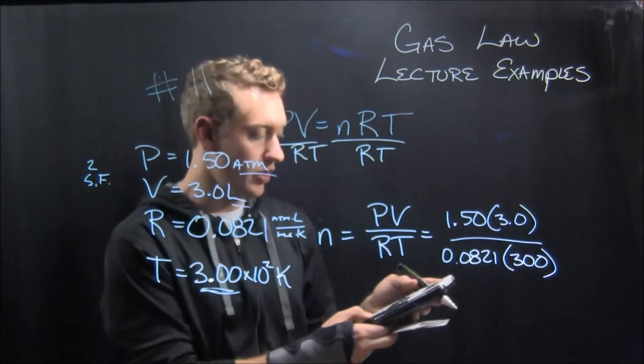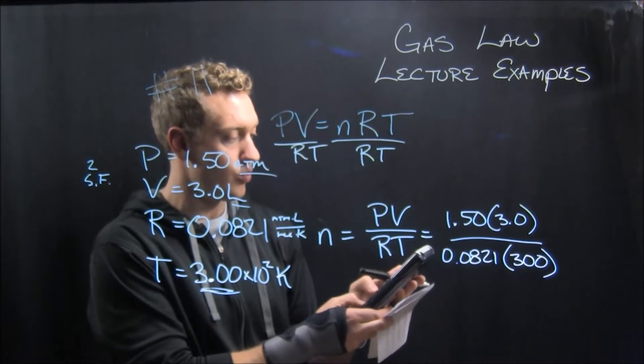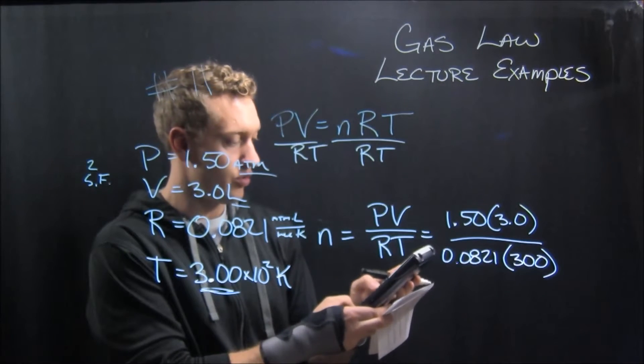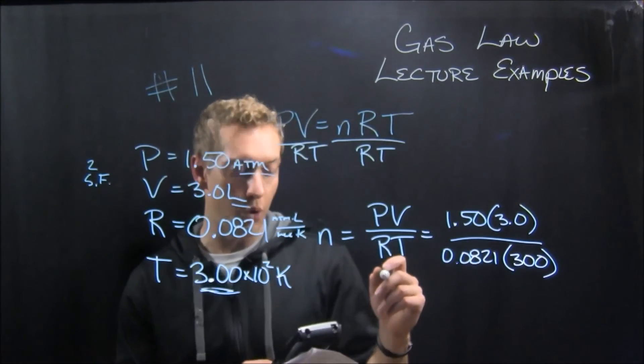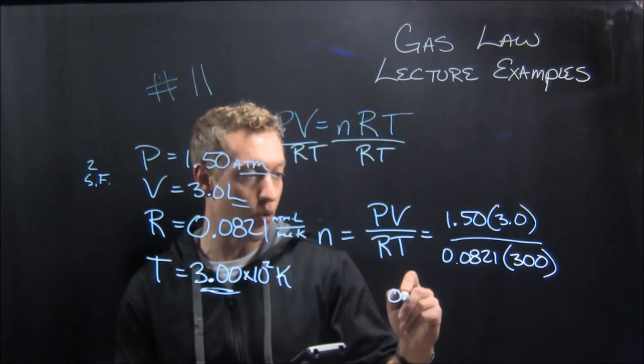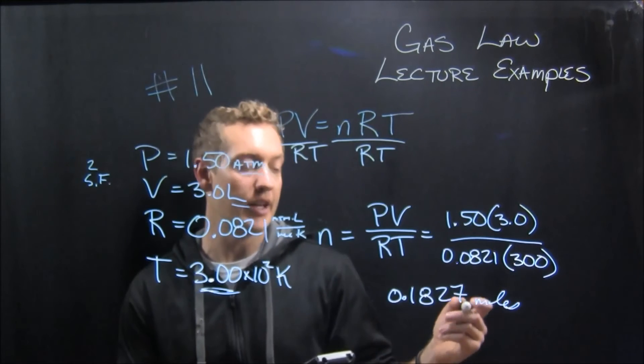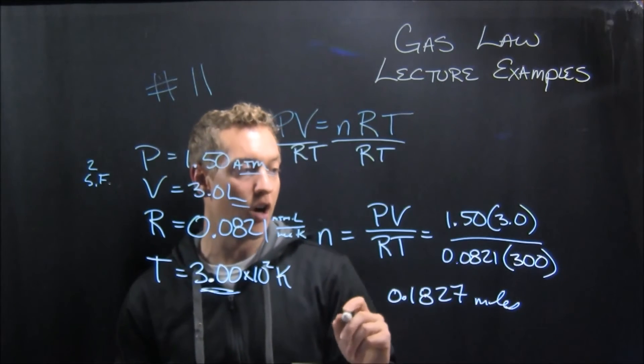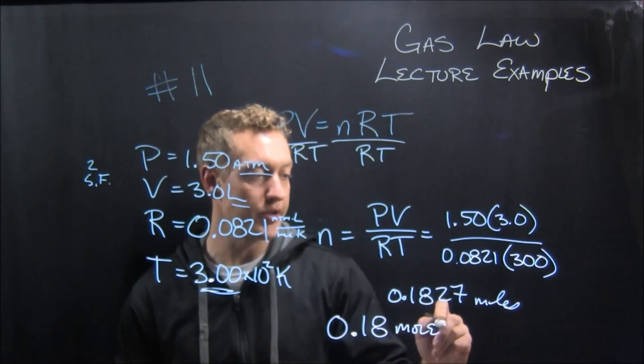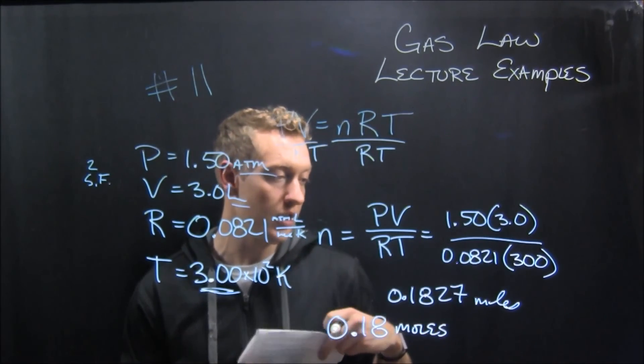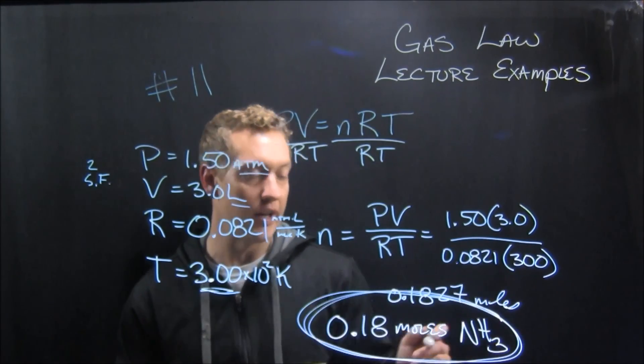Punch that into your calculator. 1.5 times 3 divided by 0.0821 times 300. And it comes out to be 0.1827 moles, rounding that to two significant figures. Our answer is going to be 0.18 moles, and the substance, I think, was ammonia, and so NH3, and that is our final answer.